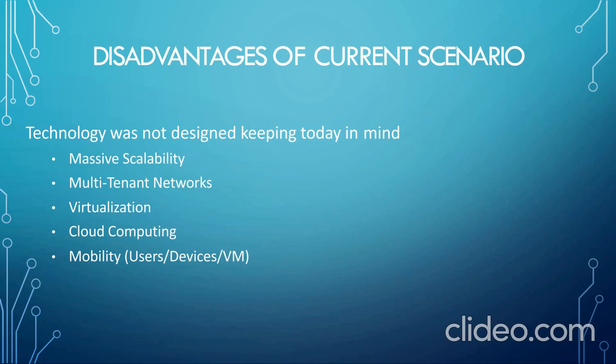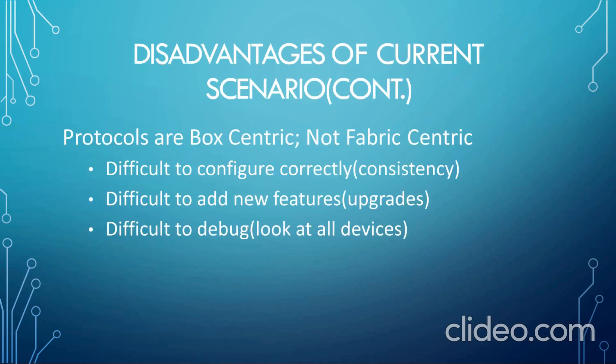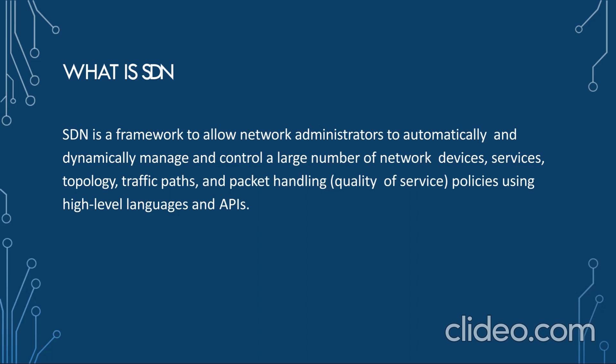These were some key problems which were solved by SDN. SDN provided massive scalability to all IoT devices by implementing software-based networking. It also made use of virtualization, cloud computing, Dockers, and Kubernetes to connect IoT devices with each other. It also provided mobility to users — for example, a person sitting in India could easily control any IoT device being used in the USA. Let us understand what exactly SDN is.